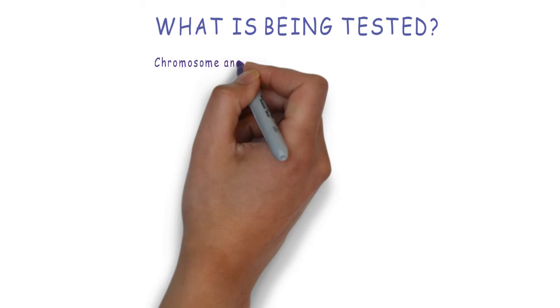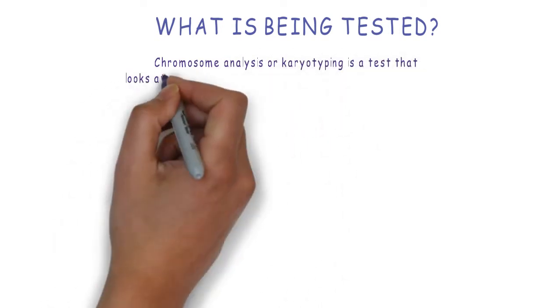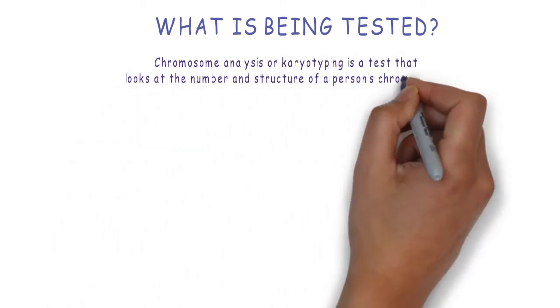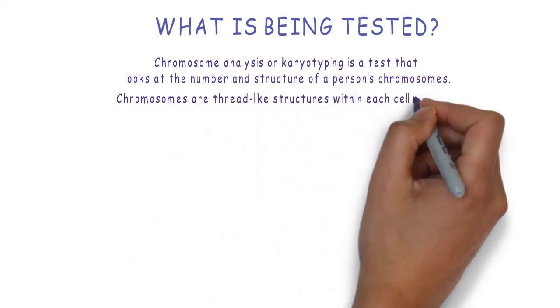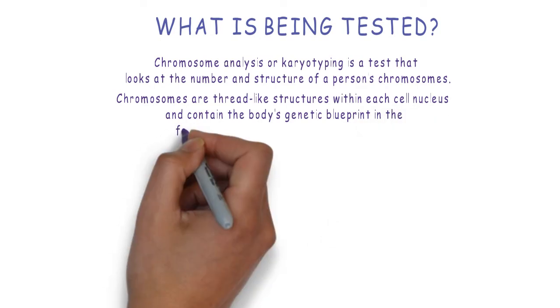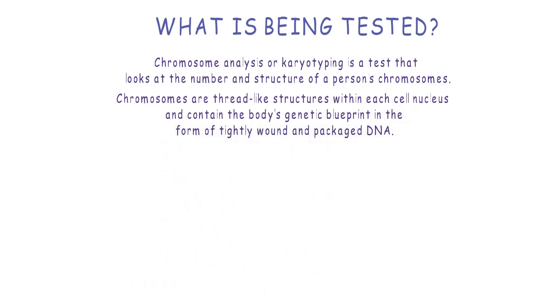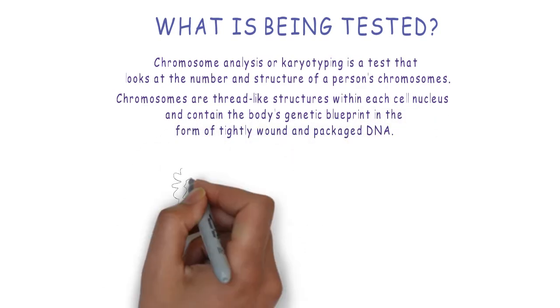Chromosome analysis, or karyotype, looks at the number and structure of a person's chromosomes. Chromosomes are threadlike structures in each cell nucleus and contain the body's genetic blueprint in the form of tightly wound and packaged DNA.